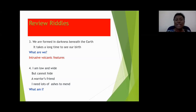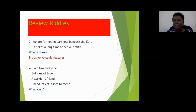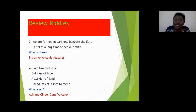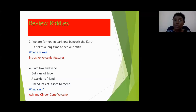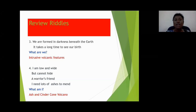Riddle four: I am low and wide, but cannot hide. A warrior's friend — I need lots of ashes to mend. Malcolm says a shield volcano. Naisha says shield volcano. Joelle says shield volcano. The answer is a shield volcano. The key words: a warrior's friend — shield volcanoes are wide and representative of a warrior's shield. Excellent job — you all were fabulous today!